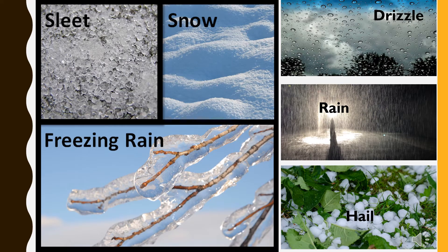Here we have shown the different forms of precipitation: sleet, snow, freezing rain, drizzle, rain, and hail.